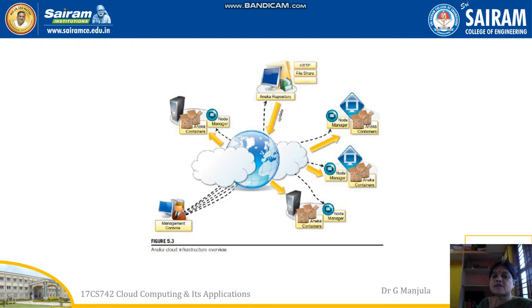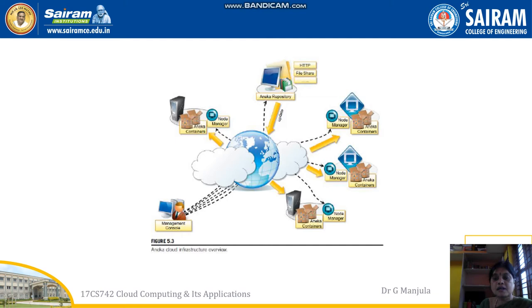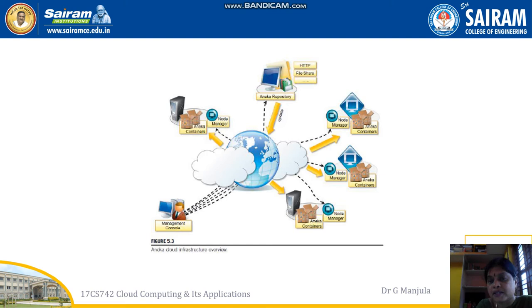Looking at the Aneka cloud infrastructure: through the internet, different people are going to process and access data in different modes. Aneka looks like a community cloud — there is a node manager and Aneka container, an Aneka repository, and altogether a management console to consolidate all management. Aneka is always bounded within a node manager. As you can see in every diagram, there is a node icon called node manager, and the container contains three services: application services, foundation services, and fabric services.